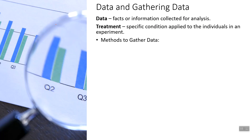Next up — we also talked about analyzing and gathering data. So what is data? Data is facts or information collected for analysis. We're also going to go over something called a treatment — a treatment is a specific condition applied to an individual in an experiment. Now we have three methods to gather data. Number one is a survey — a survey is just when you ask people questions. You've probably taken part in a survey at one point or another; filling out a Google form on the first day of class was technically a survey.